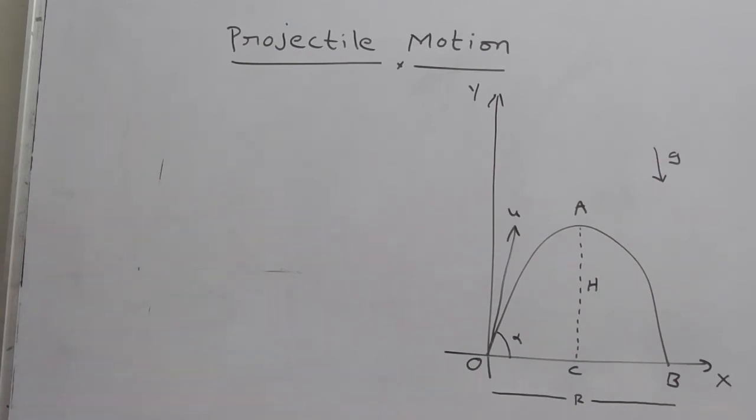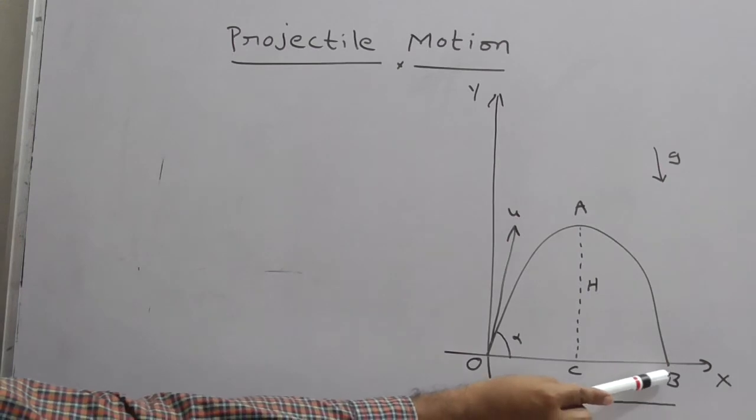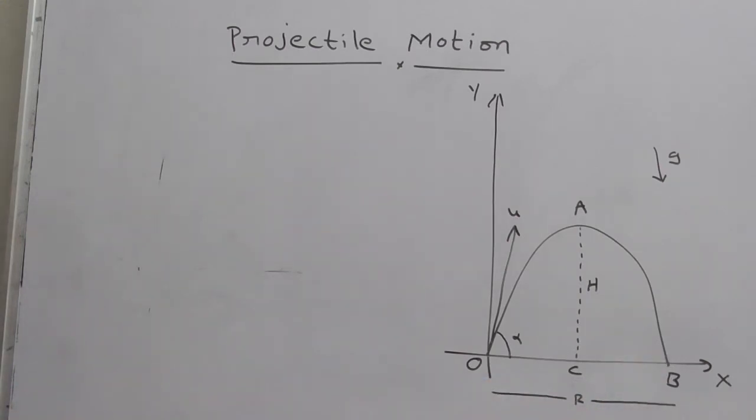the particle remains close to the earth surface and the air resistance is negligible. Now, what is the definition of projectile motion? If a particle is projected from the point O,